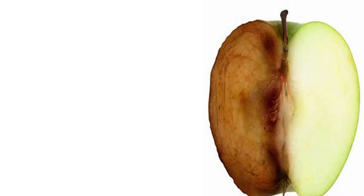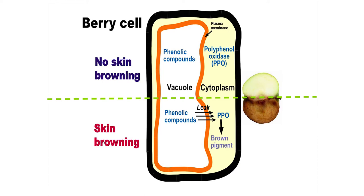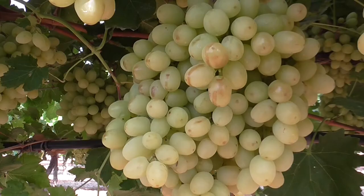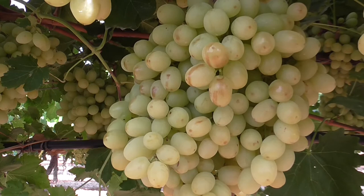Browning is a complex problem of many fruits including table grapes. It occurs when cells in grape berries break down naturally during fruit ripening. The degradation of cell membranes results in the mixing of the enzyme polyphenol oxidase with natural phenolic compounds in the fruit. The mixing of these compounds triggers oxidation reactions that lead to tissue browning.